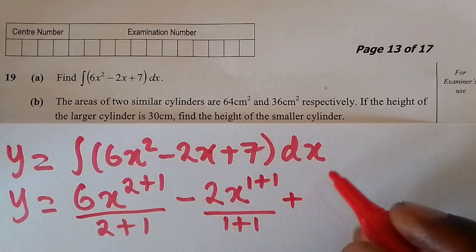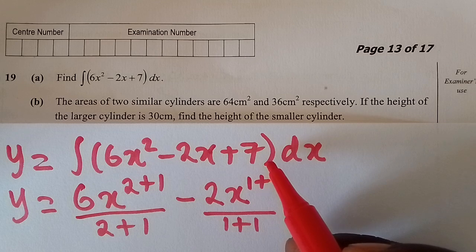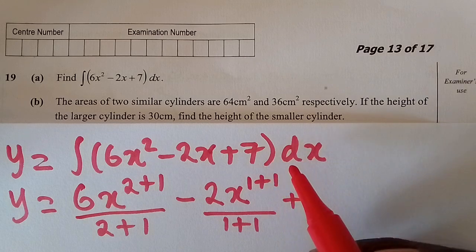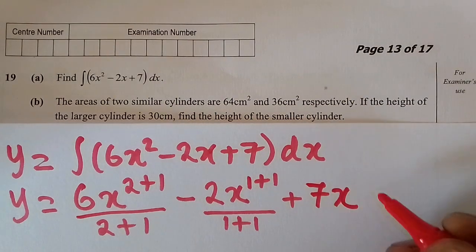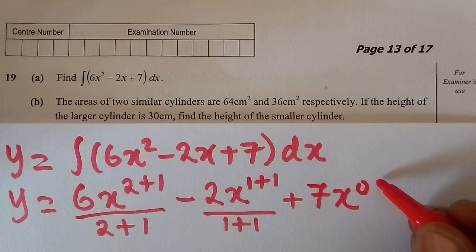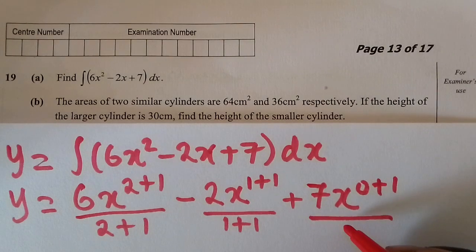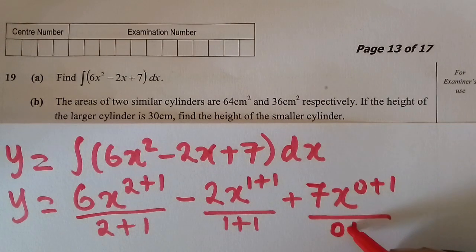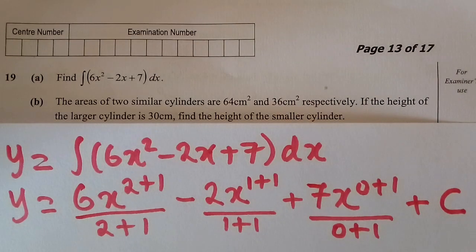For the constant term 7, there is no x variable, so we introduce x to the power 0, because x to the power 0 is 1, meaning 7 times 1 is still 7. So we write 7 times x to the power 0 plus 1, divided by the new index 0 plus 1, then add plus c — the unknown constant.